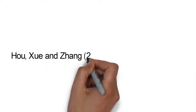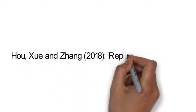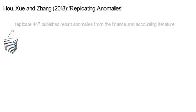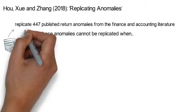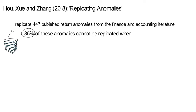The 2018 Review of Financial Studies publication by Hou, Xu, and Zhang, titled 'Replicating Anomalies,' replicates 447 published return anomalies from the finance and accounting literature. So think about it — there are 447 alpha-generating strategies. The authors find, perhaps surprisingly, that 85% of these anomalies cannot be replicated.